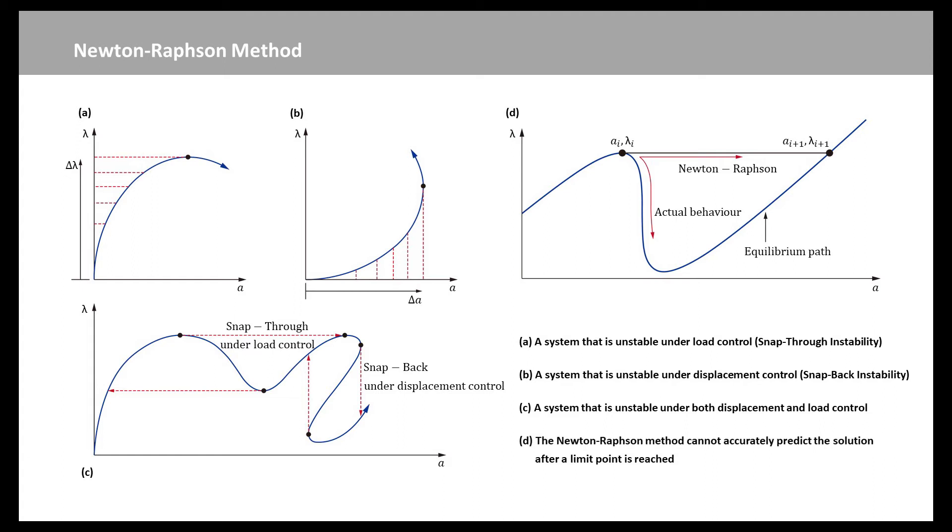The definition of a limit point suggests that in order to remain on the equilibrium path, you need to change your loading pattern depending on whether the limit point is a local minimum or maximum in the u-lambda space.